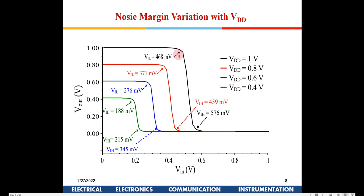The noise margin low is 468 millivolts — it is that range of input voltage which will be considered as logic 0. Any voltage from 0 to 468 millivolts will give an output of 1. The noise margin high is 1 minus 576 millivolts, which comes close to a similar value.